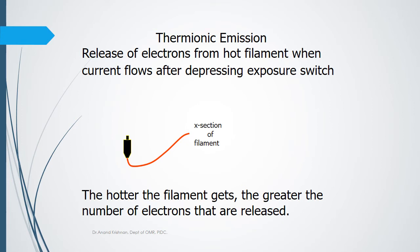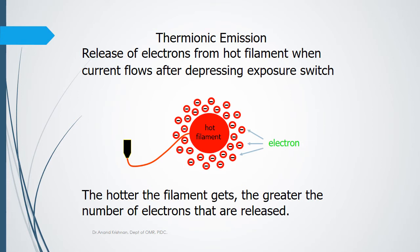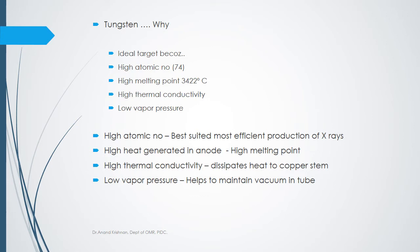X-ray production is based on the principle of thermionic emission. When electric current is passed through the tungsten filament at the cathode, it heats up and emits electrons. These electrons travel and strike the target anode. Tungsten is used in both cathode and anode because it is an ideal target material — it has a very high atomic number, high melting point, high thermal conductivity, and low vapor pressure.